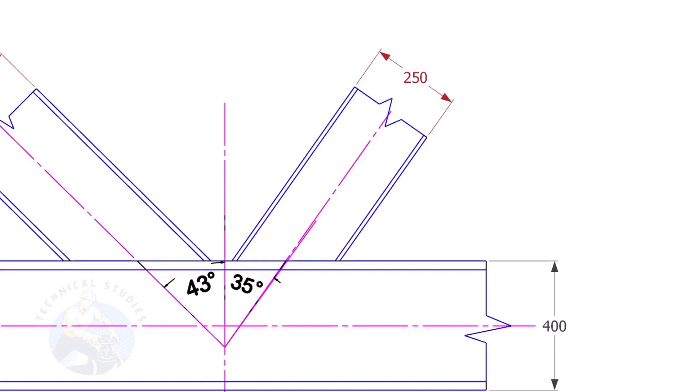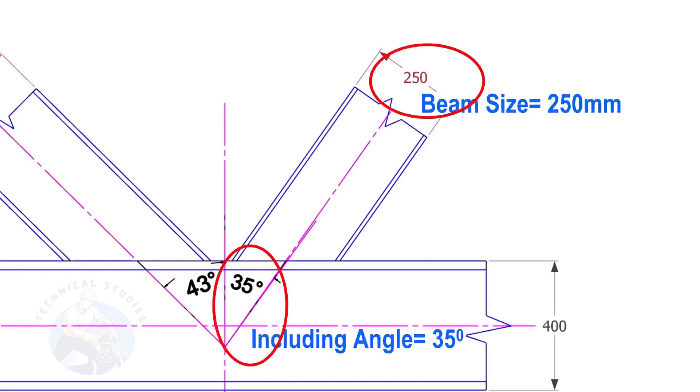Here, the size of the beam is 250 and the including angle is 35. Let us calculate the cutback.